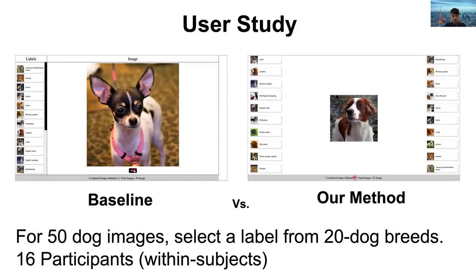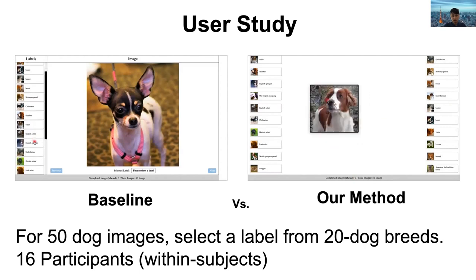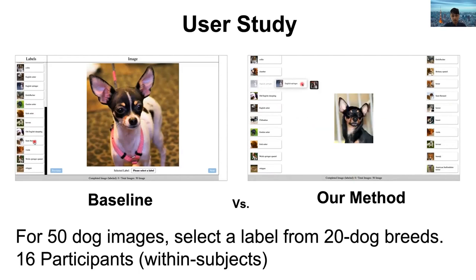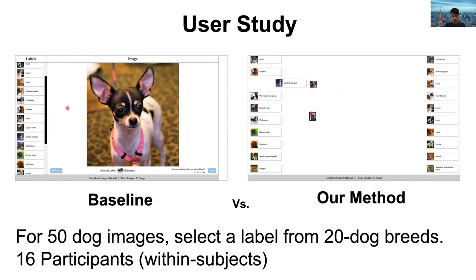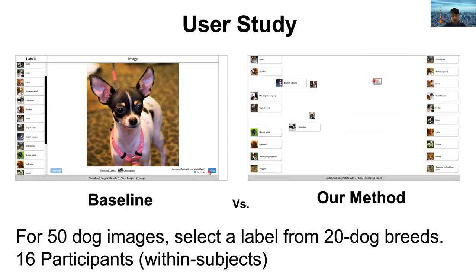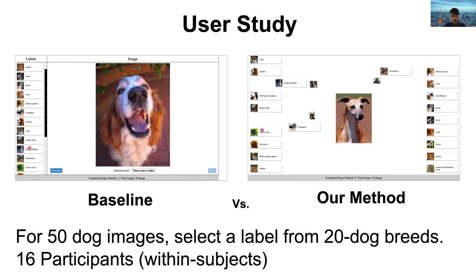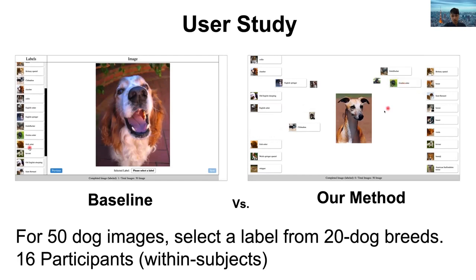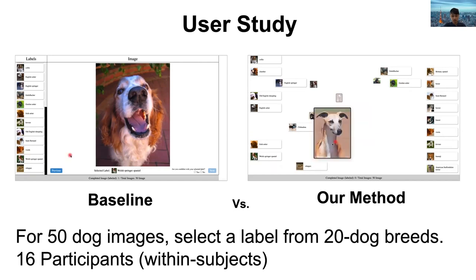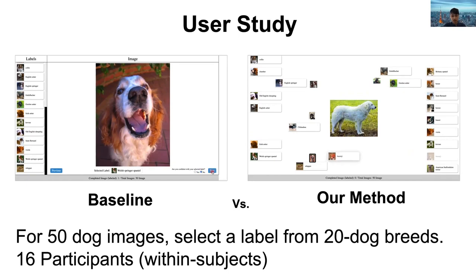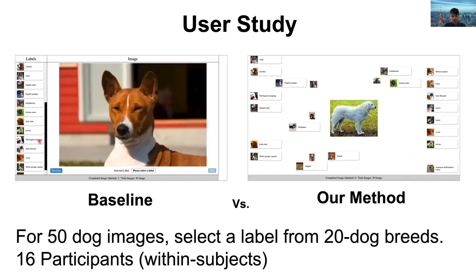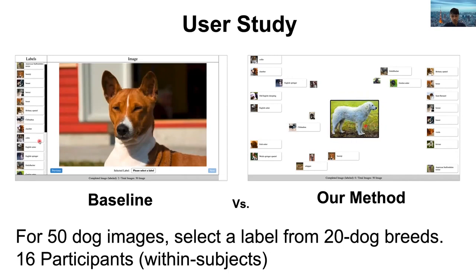We ran a user study to compare a traditional non-spatial layout and our proposed spatial layout interface in an image labeling task. The labeling task was to label 50 dog images by selecting appropriate labels from a 20 dog breed list. The left video shows how a user worked with the traditional labeling interface, and the right video shows how a user worked with our proposed interface.